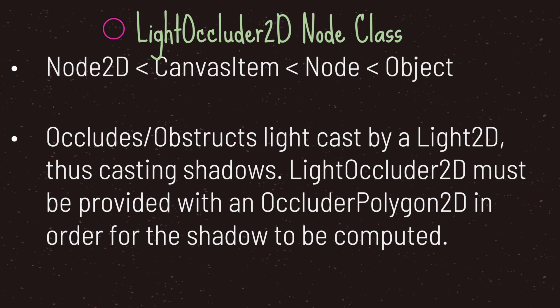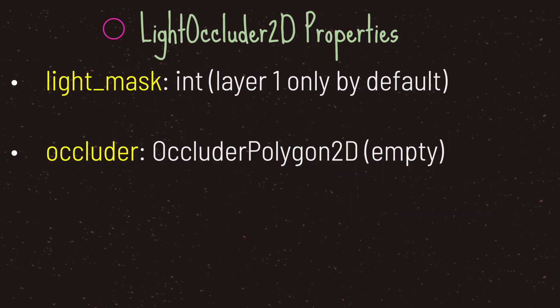The LightOccluder2D must be provided with an OccluderPolygon2D in order for shadows to be computed. The LightOccluder2D comes with two properties. The first is the light mask property — by default you are set to layer one. The second property is called occluder, which is your OccluderPolygon2D data type, and by default this is empty, meaning you have to set this up yourself.